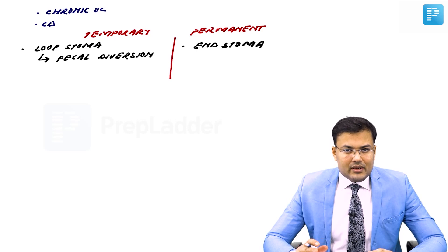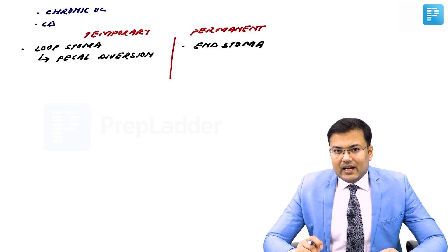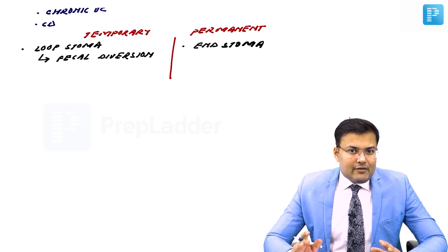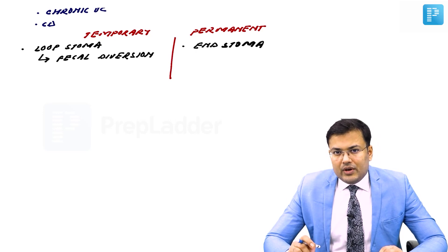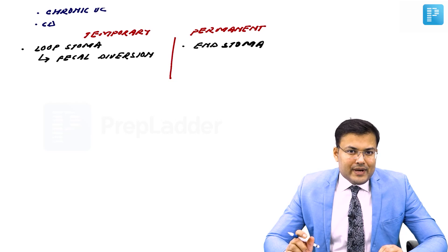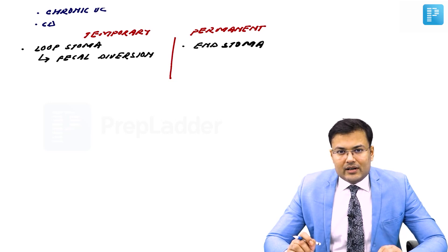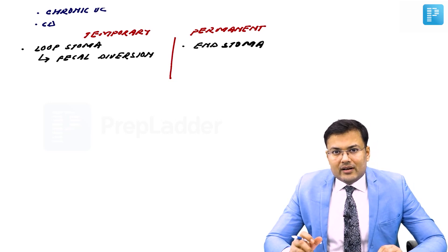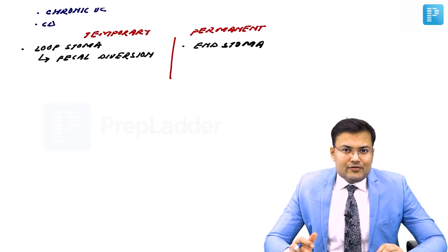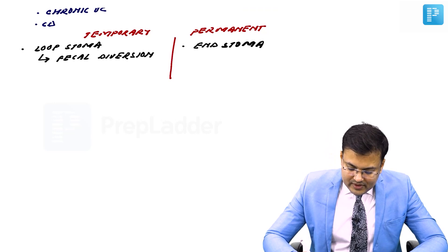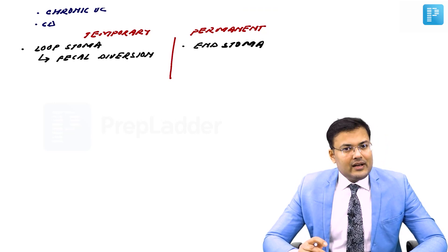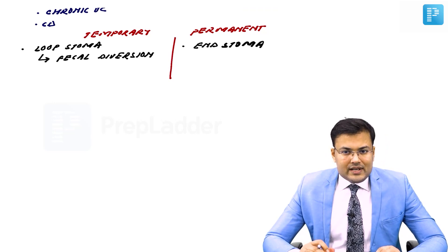For example, a patient with carcinoma rectum undergoes APR — abdominal perineal resection. You remove the rectum and anal canal, and you are left only with sigmoid, which is brought out in the left iliac fossa permanently. So this is end stoma, and generally it is permanent.